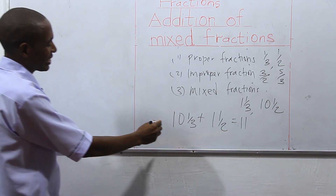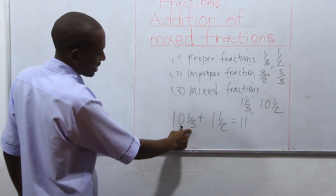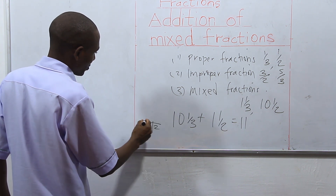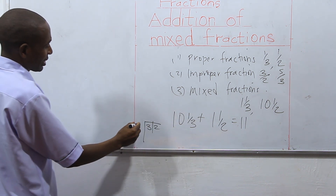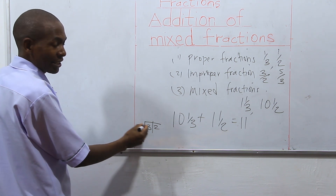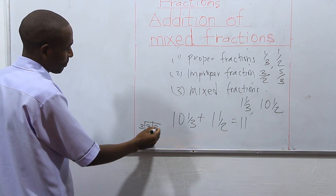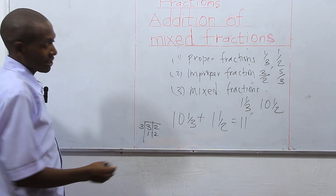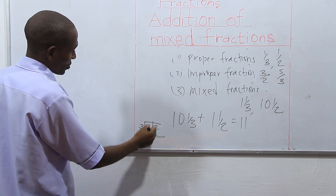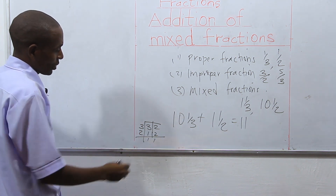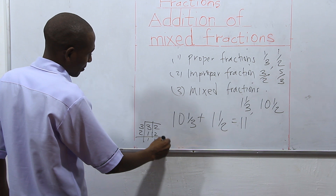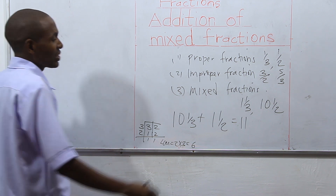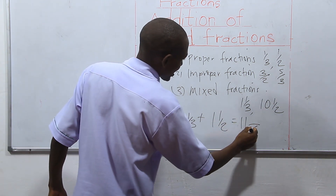Then from there, we want to find the LCM of the denominators — that is, LCM of three and two. We write three and two, then divide by three: three divided by three is one, and two divided by three is impossible so we write two. Then we divide by two, getting one and one. So our LCM is two times three, which is six.